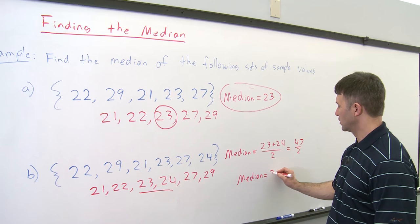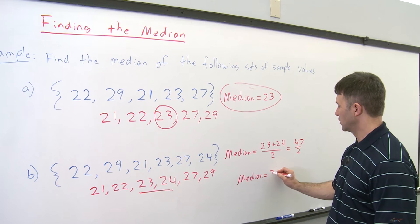we get the median is equal to 23.5. So in the second example, the median is equal to 23.5.